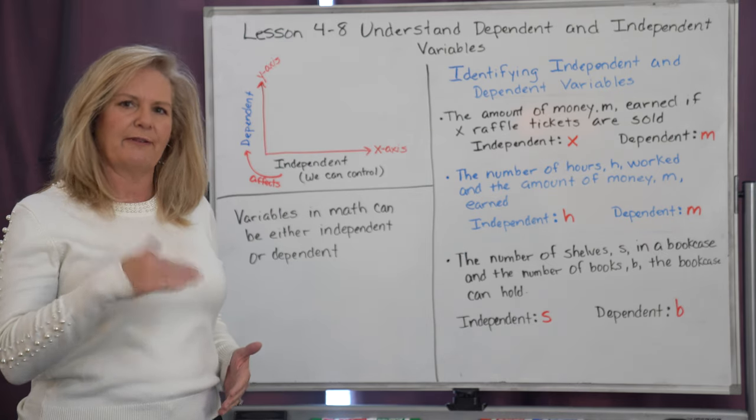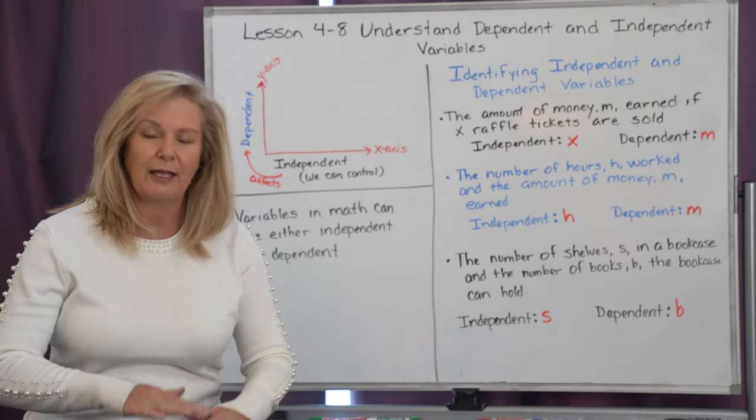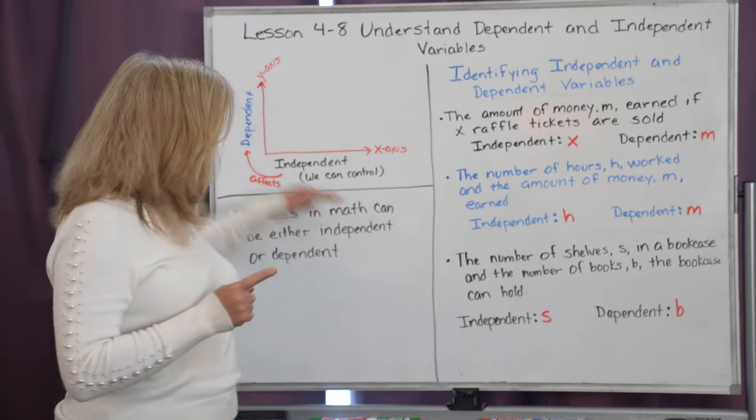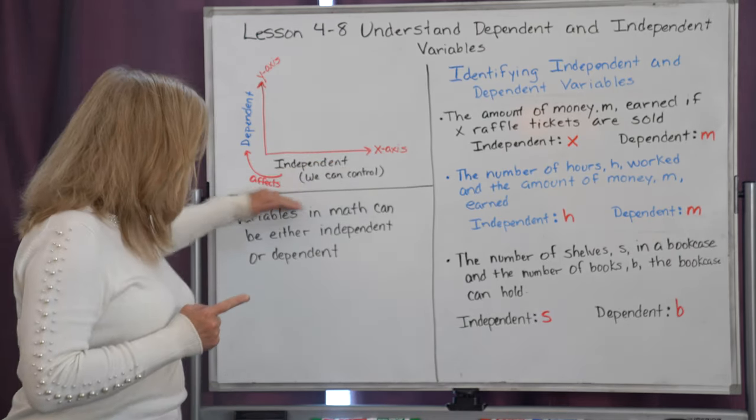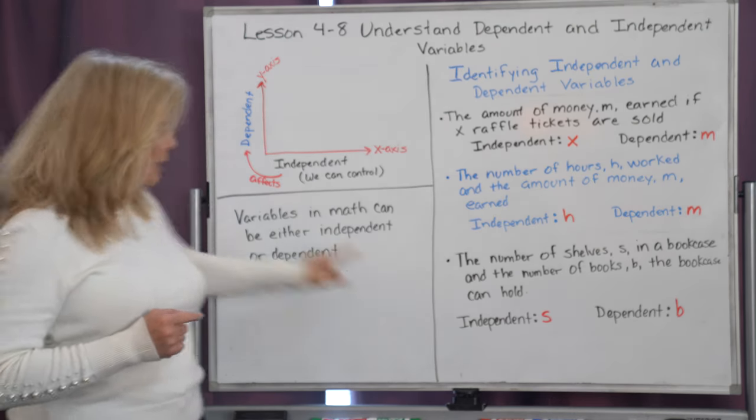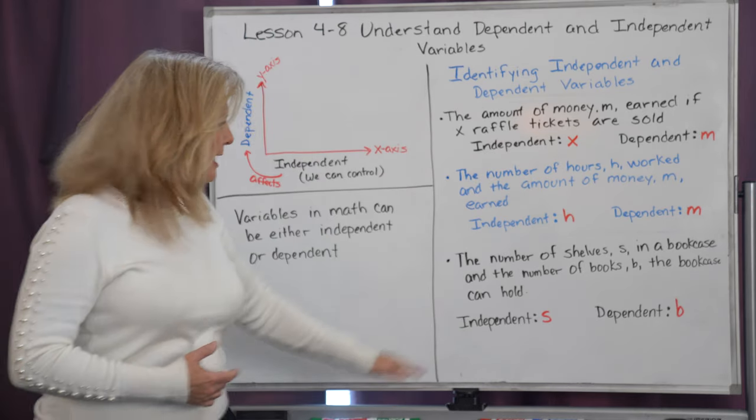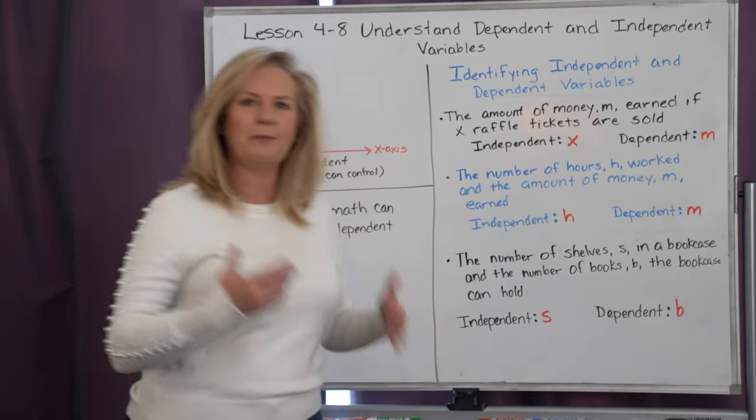If I have one shelf, it can hold a certain number of books. But if I add a second shelf, I can get more books. Therefore, it's the shelves that are directly affecting the number of books we can store on it. Our independent variable would be s, the shelves, and our dependent variable would be b, the number of books stored.